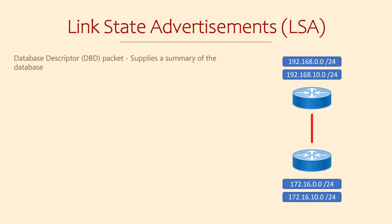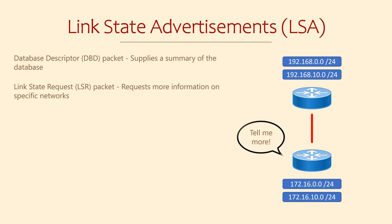Upon receiving a DBD, a router will look at the summary to see if there are any networks it can learn about. If there are networks it hasn't yet learned about, it will ask for more information. It does this using a packet called the Link State Request, or LSR. LSRs selectively ask for more information about specific networks, not the entire database.